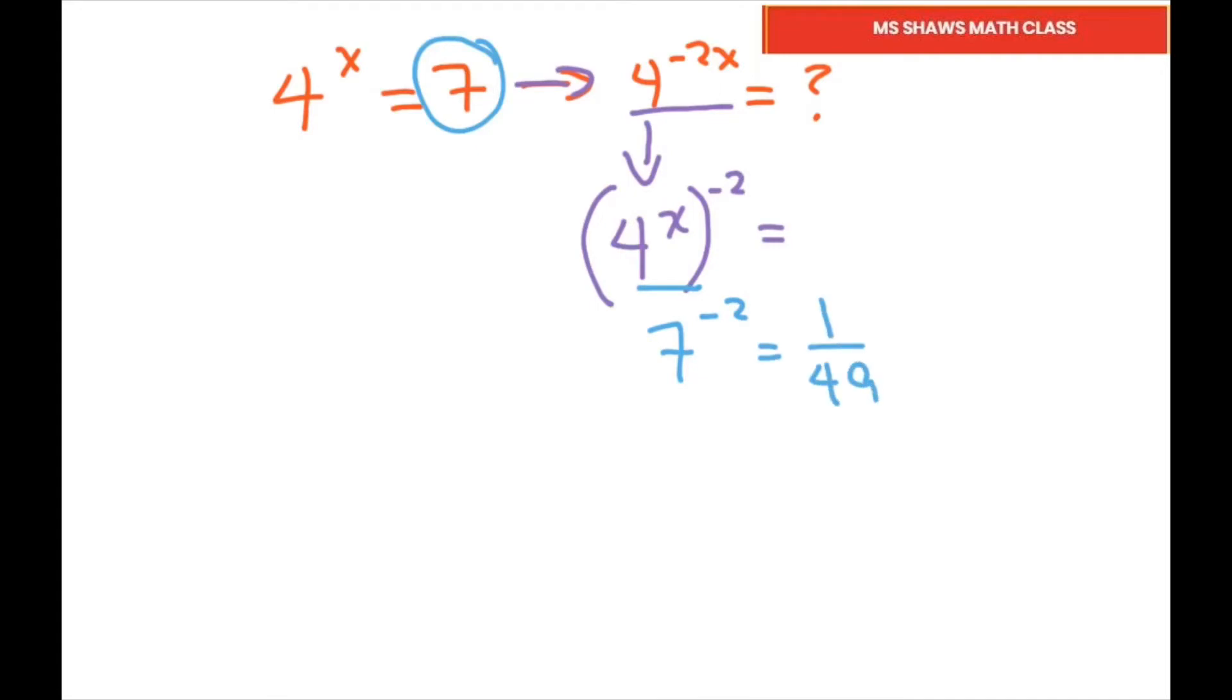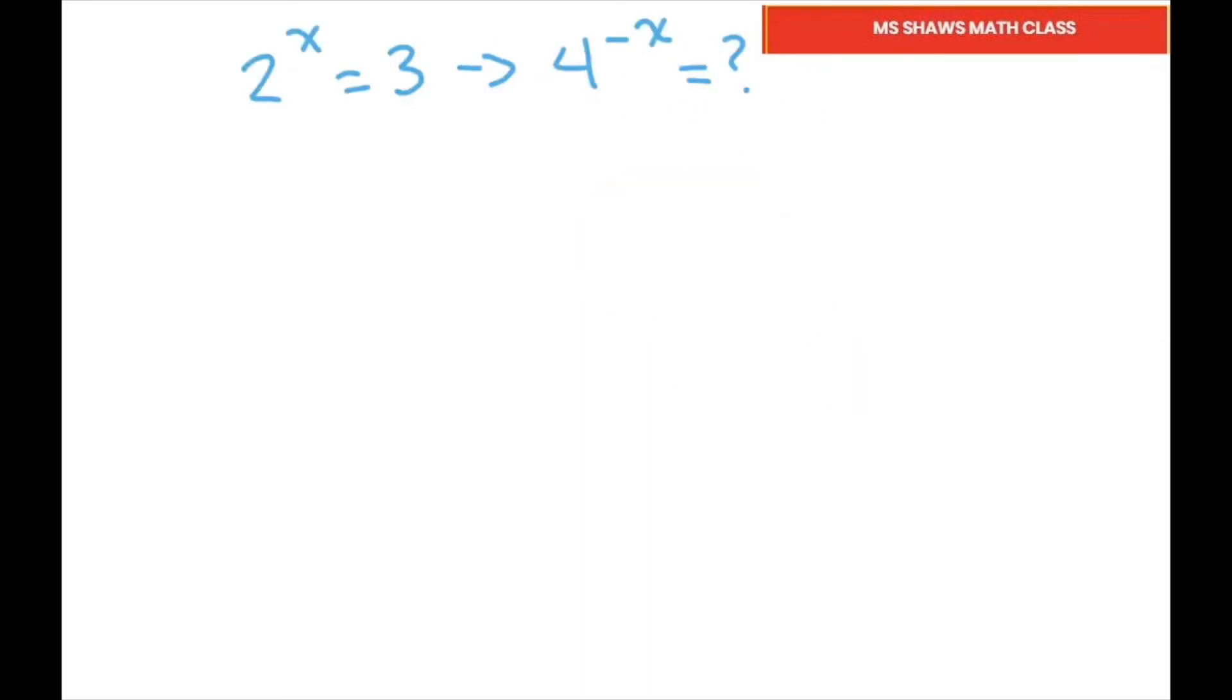All right, so this part here is based off your power property. The next one: let's just rewrite this. This is 2 squared to the negative x, so this would be 2 to the negative 2x. And I want it to look like 2 to the x so I can substitute in 3.